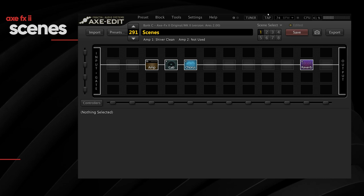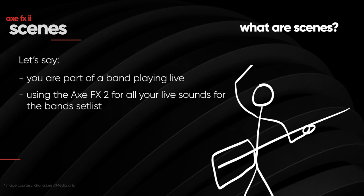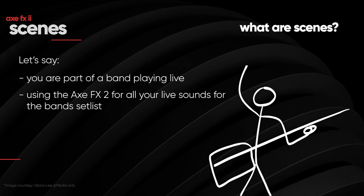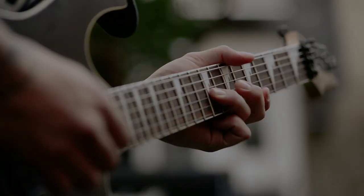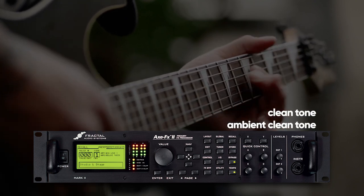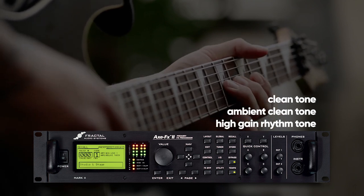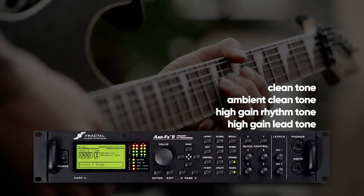In this video we'll be talking about what exactly scenes are, how to create them, and how to use them in a real life situation. To explain this better, let's take a real life scenario where you are part of a heavy metal band, you're the only guitar player, and your duties in a particular track is to deliver four different tones from the Axe FX2: a clean tone, a clean ambient tone, a high gain distortion tone, and a high gain lead tone. That's where scenes can really help you.